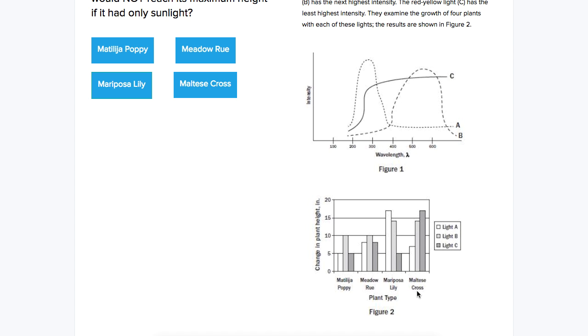Then we can look at the change in plant height, and we can see that of the four plant types, only one plant type reaches its maximum height under light A, and that's the mariposa lily. The poppy, the roo, and the cross all reached their maximum height under light B or light C, both of which it would be reasonable to assume might be replicated by sunlight because of the wavelength that their highest intensity falls under.